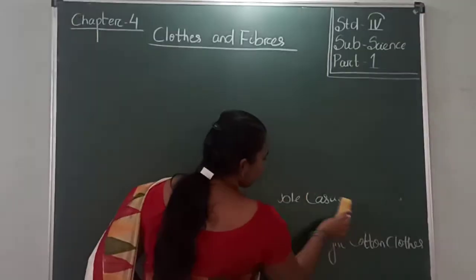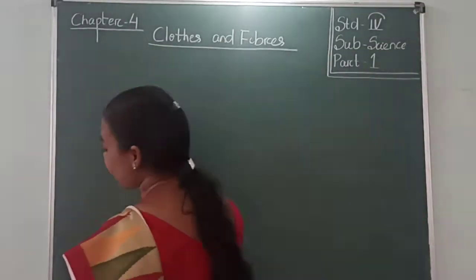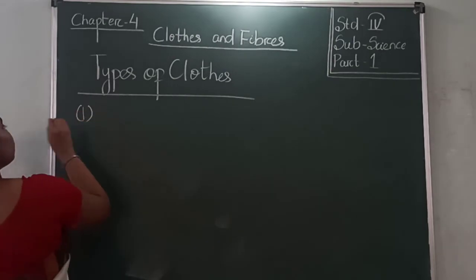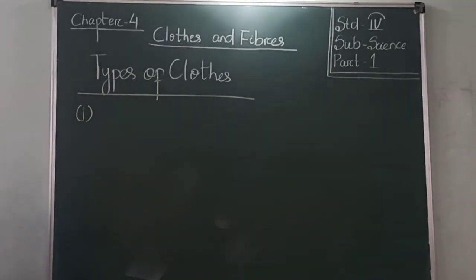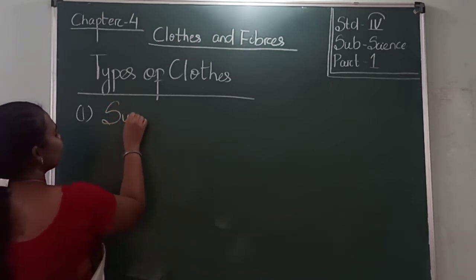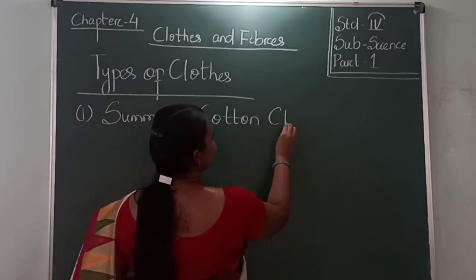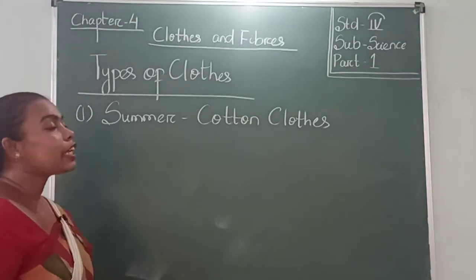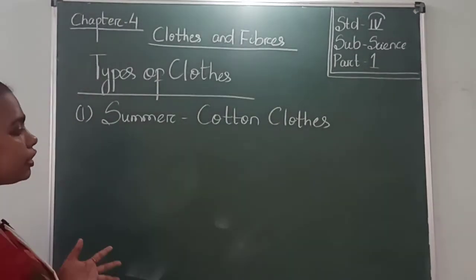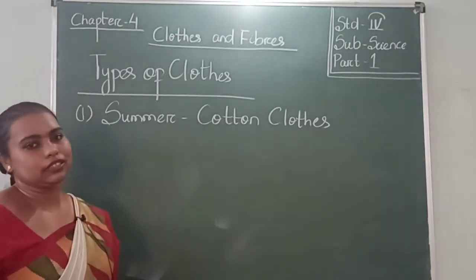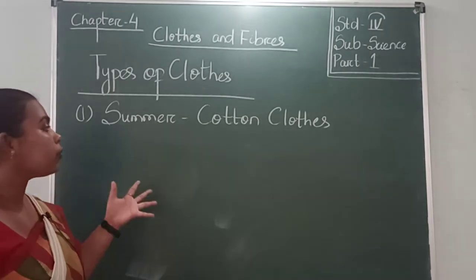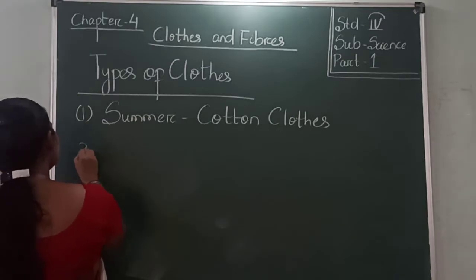The type of clothes we wear depends on the weather. First, in summer days, we wear cotton clothes. We wear them because they are very comfortable — they are not too warm or sticky, and they absorb our sweat, so we feel comfortable wearing them.